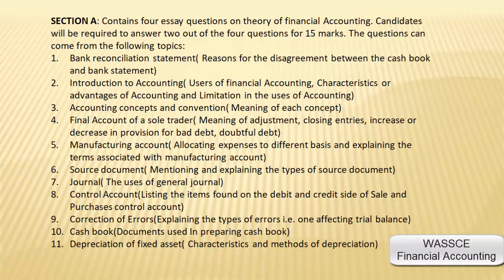Number four, final accounts of a sole trader — this can also mean the final accounts of a sole proprietor. Students are to focus on the meaning of adjustments, closing entries, and increase or decrease in provision for bad debts and doubtful debts. Number five, manufacturing accounts — students are to explain the terms associated with manufacturing accounts. Number six, source documents — students are to mention and explain the various source documents.